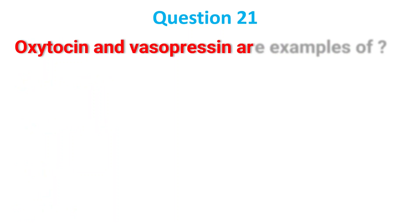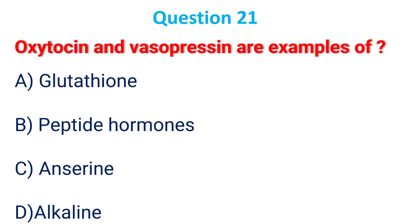Oxytocin and vasopressin are examples of: A. Butine; B. Peptide hormones; C. Anosine; D. Alkaline. The answer is B, peptide hormones.